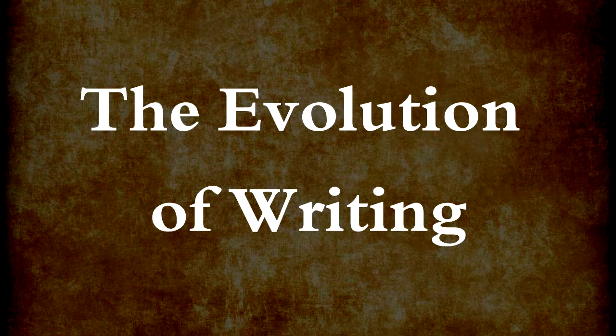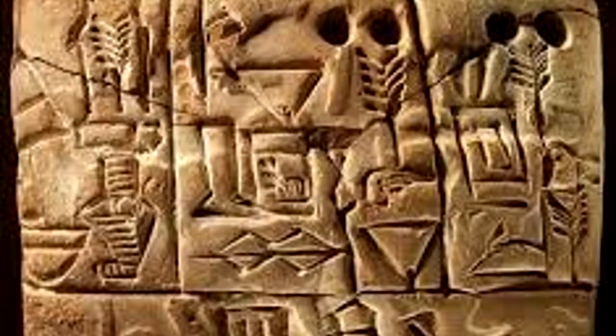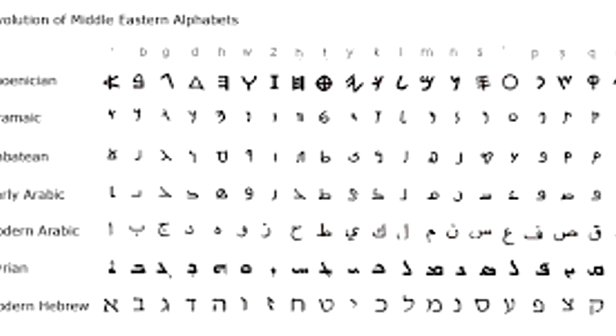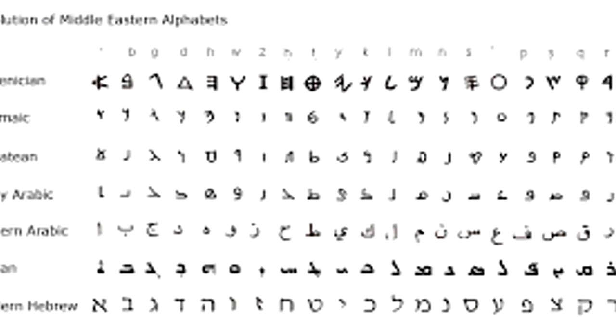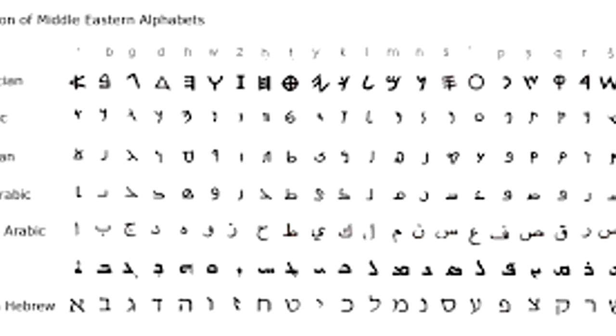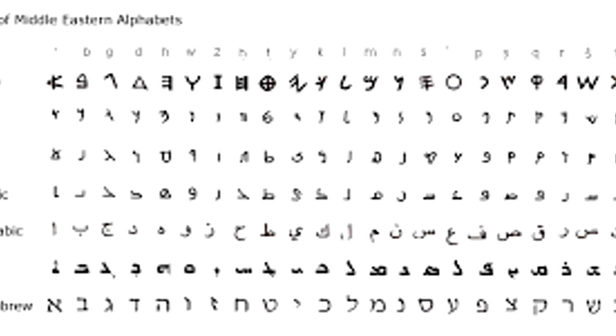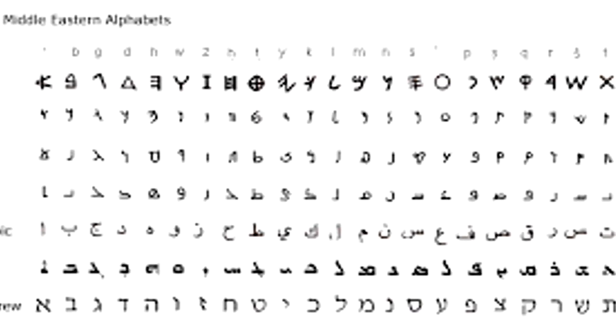The earliest writing systems were based on both pictograms and ideographs. Later, alphabets were formed. At first, everything was handwritten, and making a book could take months or years.